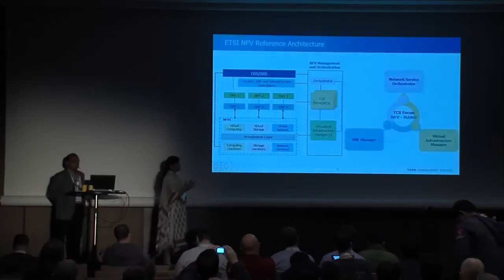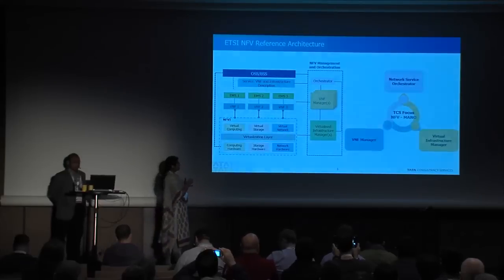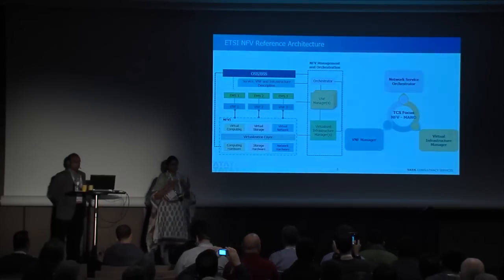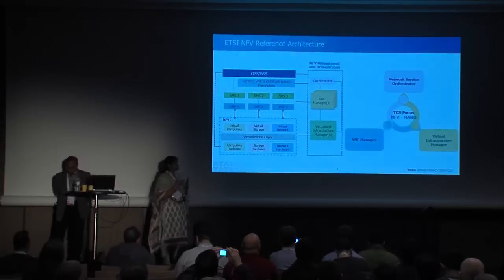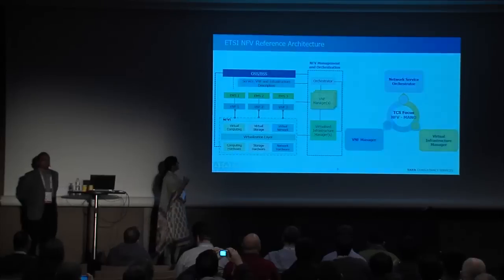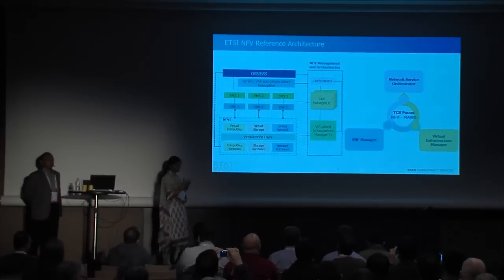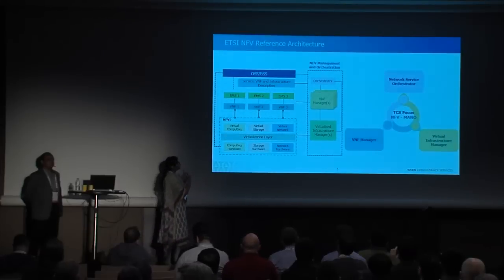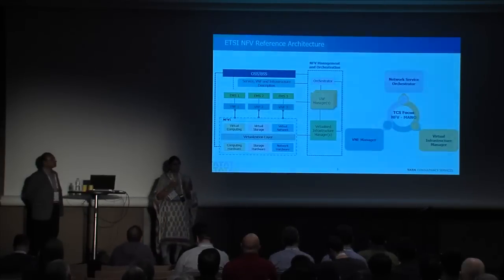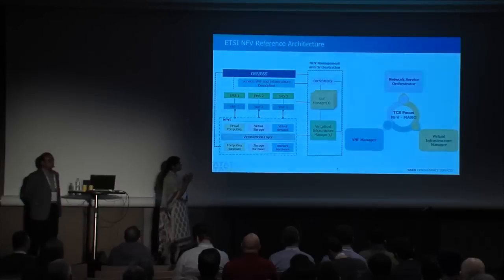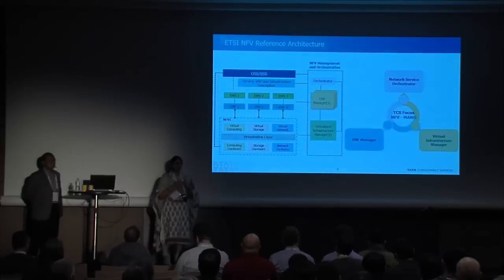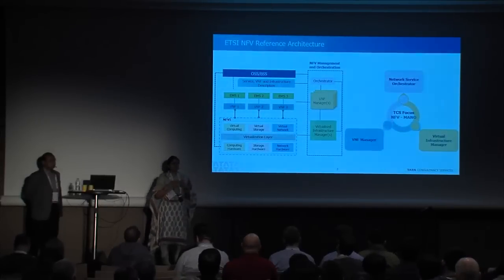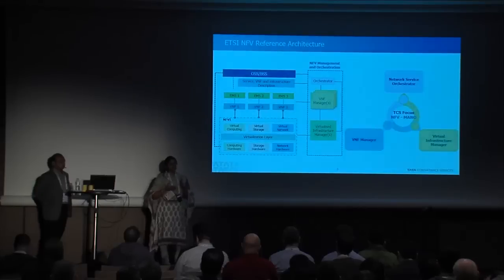This is a high-level architecture for the whole ecosystem. Starting bottom up, we have the infrastructure itself — hardware and the virtualization layer — which enables you to create pools of virtual compute, storage, and network. You have your virtual network functions running on top of this infrastructure, and the traditional OSS and BSS systems. There is also a very interesting component: the NFV management and orchestration framework, which has three key components. This is the part we are focusing on to build, because automation is a key driver to achieve rapid service delivery.